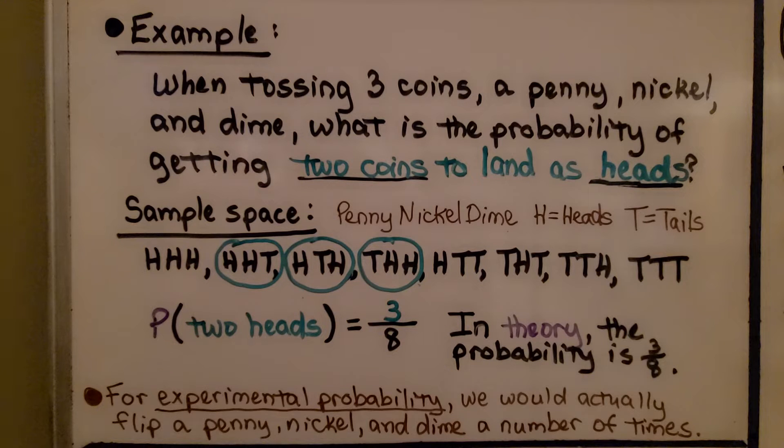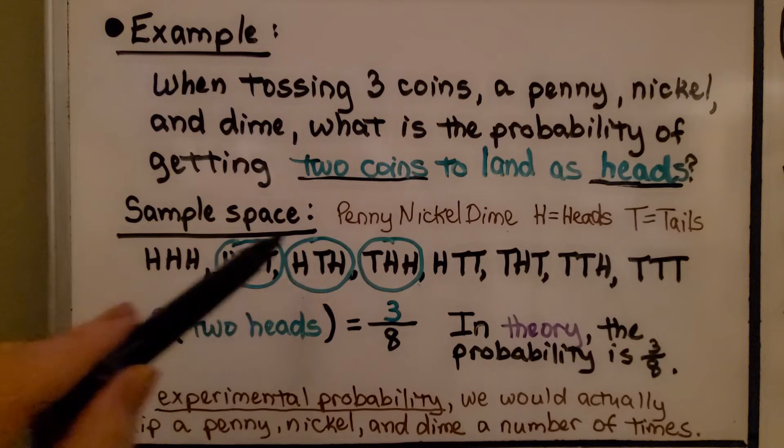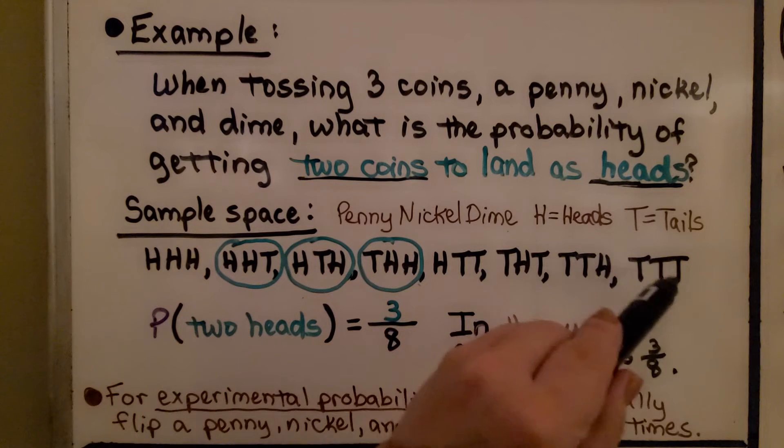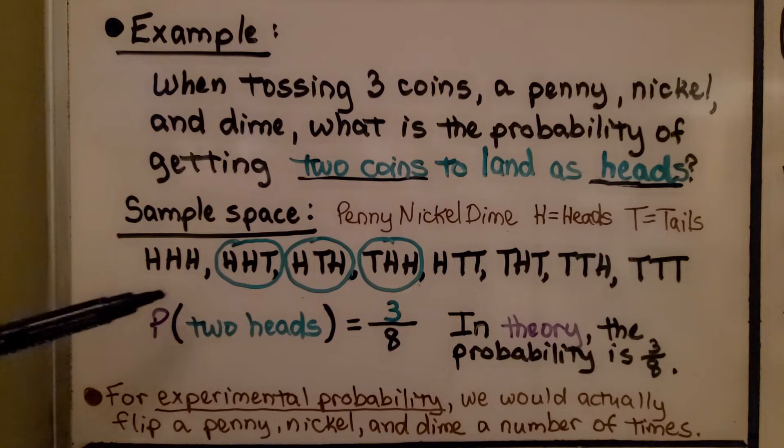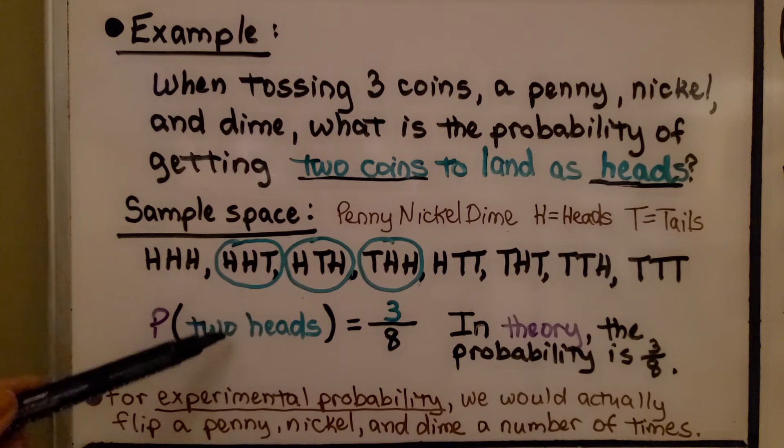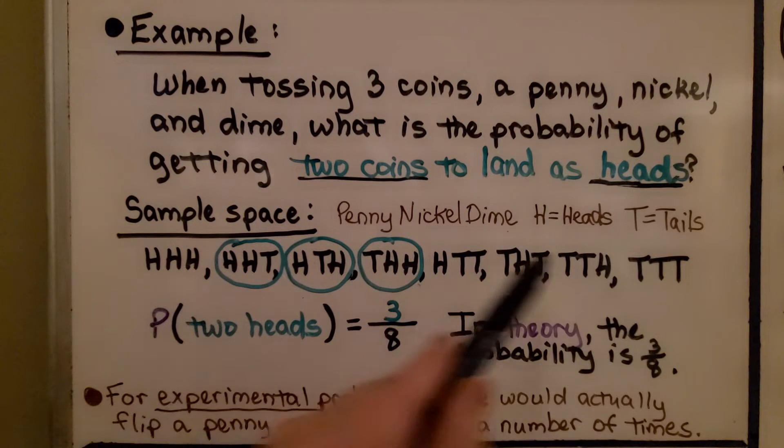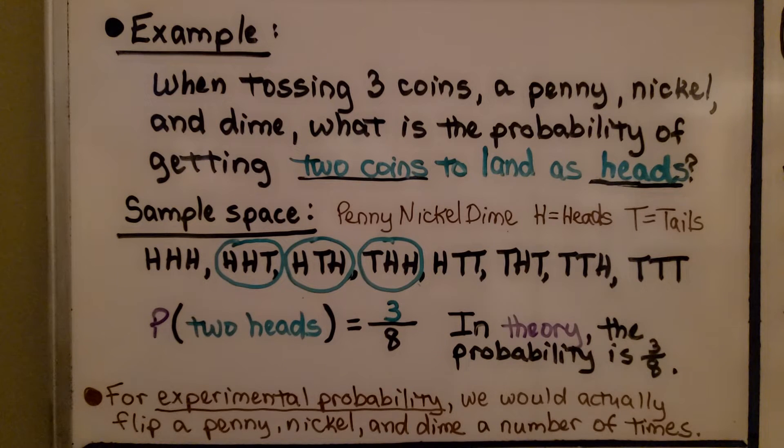See how we're doing that? Well, for two coins to land as heads, we would have three out of one, two, three, four, five, six, seven, eight. The probability of having them land two as heads would be three-eighths. We have three out of eight. So in theory, the probability is three-eighths.